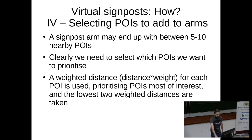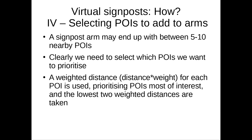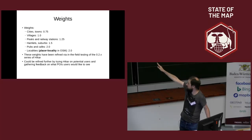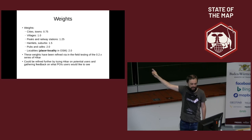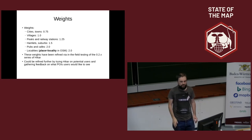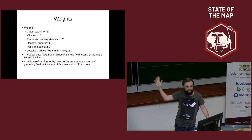Basically: route to POI, work out the bearing to each POI, compare the bearing to each arm, and allocate destinations to each arm on the signpost — up to two destinations per arm. POIs are prioritized by weighted distance: weight multiplied by distance to the POI. Cities and towns have the most priority, followed by villages, peaks and railway stations, hamlets and suburbs, then pubs, cafes, and localities. These weights have been refined throughout the 0.2 series.